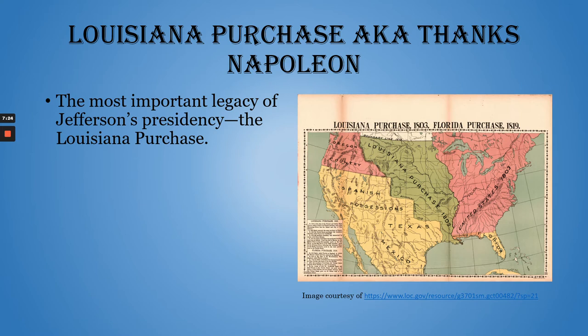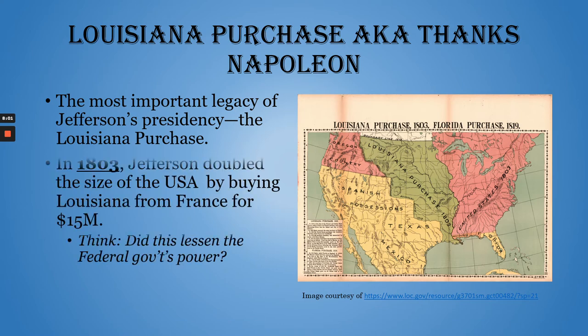The most important legacy of Jefferson's presidency is the Louisiana Purchase. When you say Louisiana today, you think about that little state that looks like a boot just east of Texas. But the Louisiana Purchase, way back in 1803, went from the Gulf of Mexico all the way up to Canada — that large green area in the middle of the country. It essentially went from the Mississippi River to the Rocky Mountains. When Jefferson bought it for $15 million, it basically doubled the size of the United States.